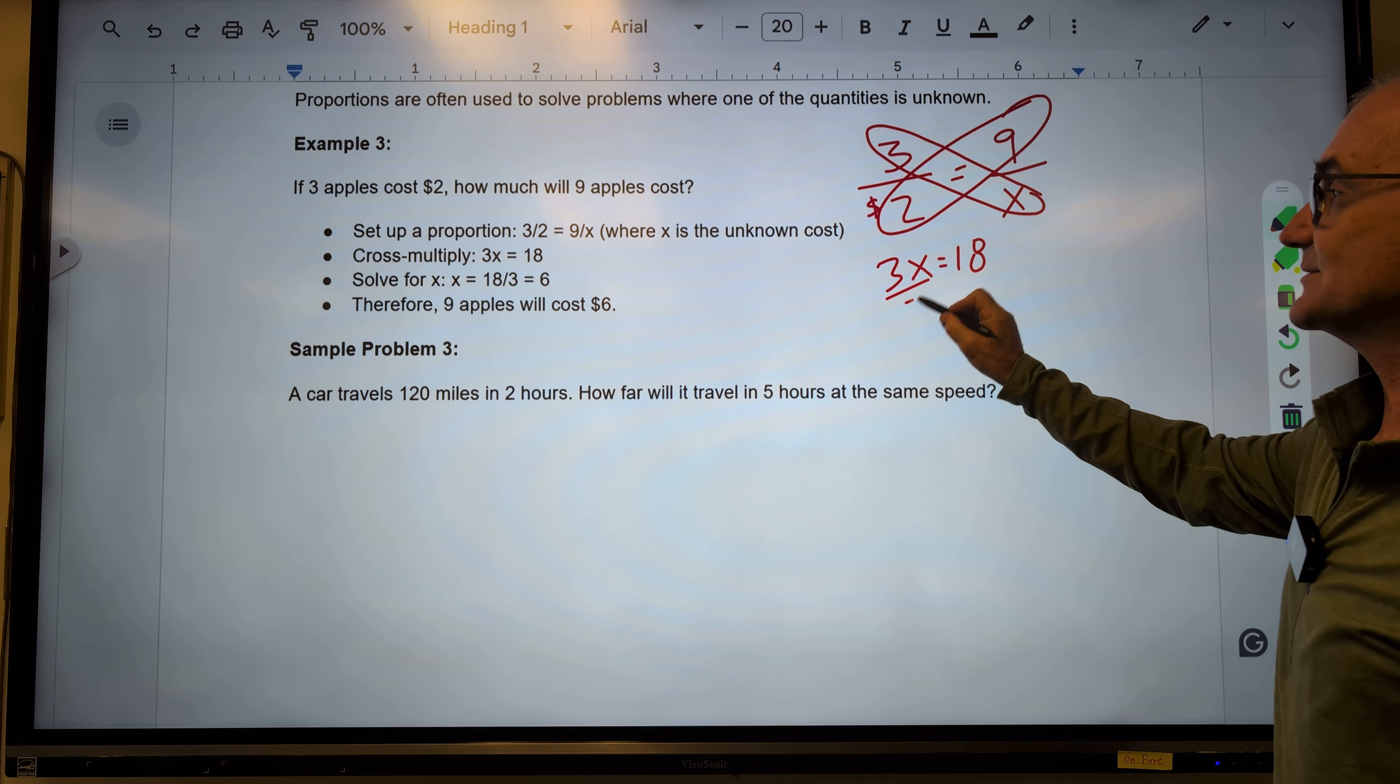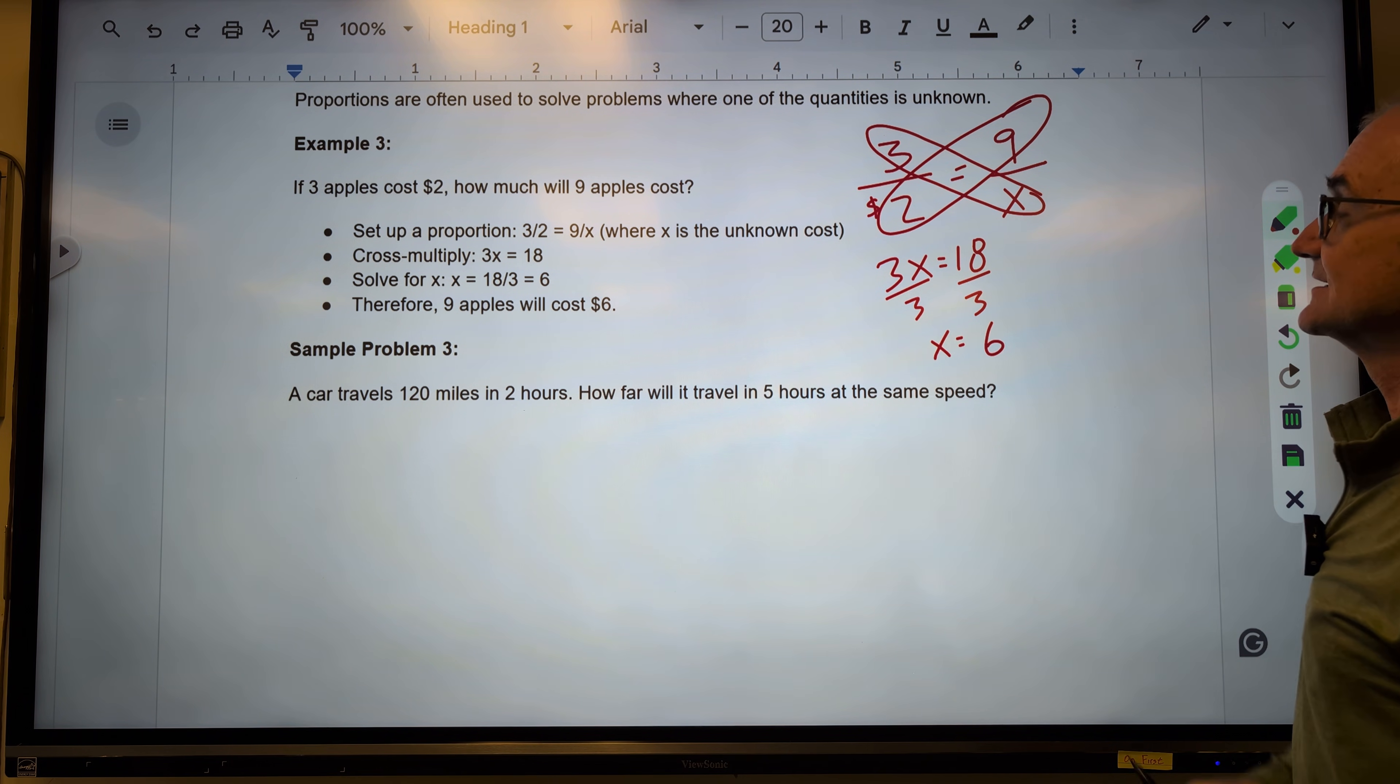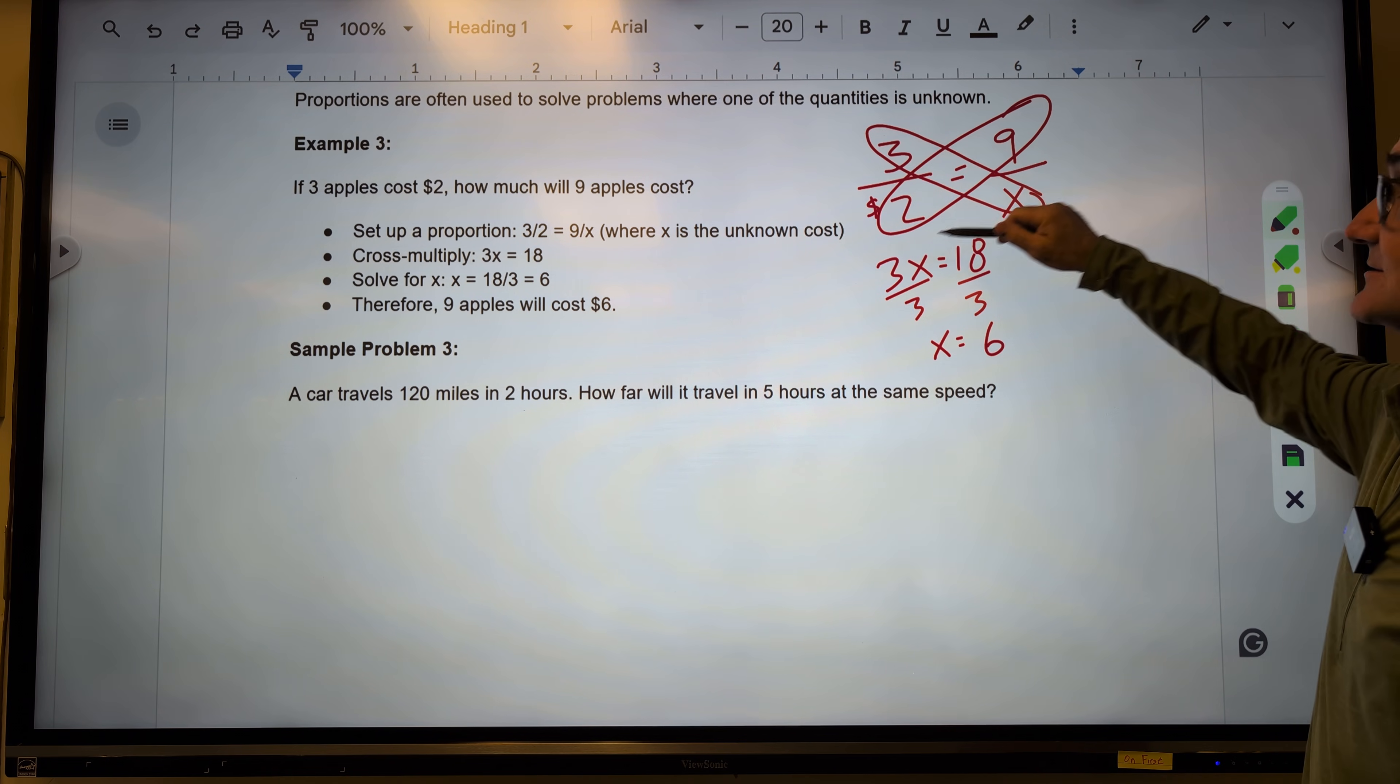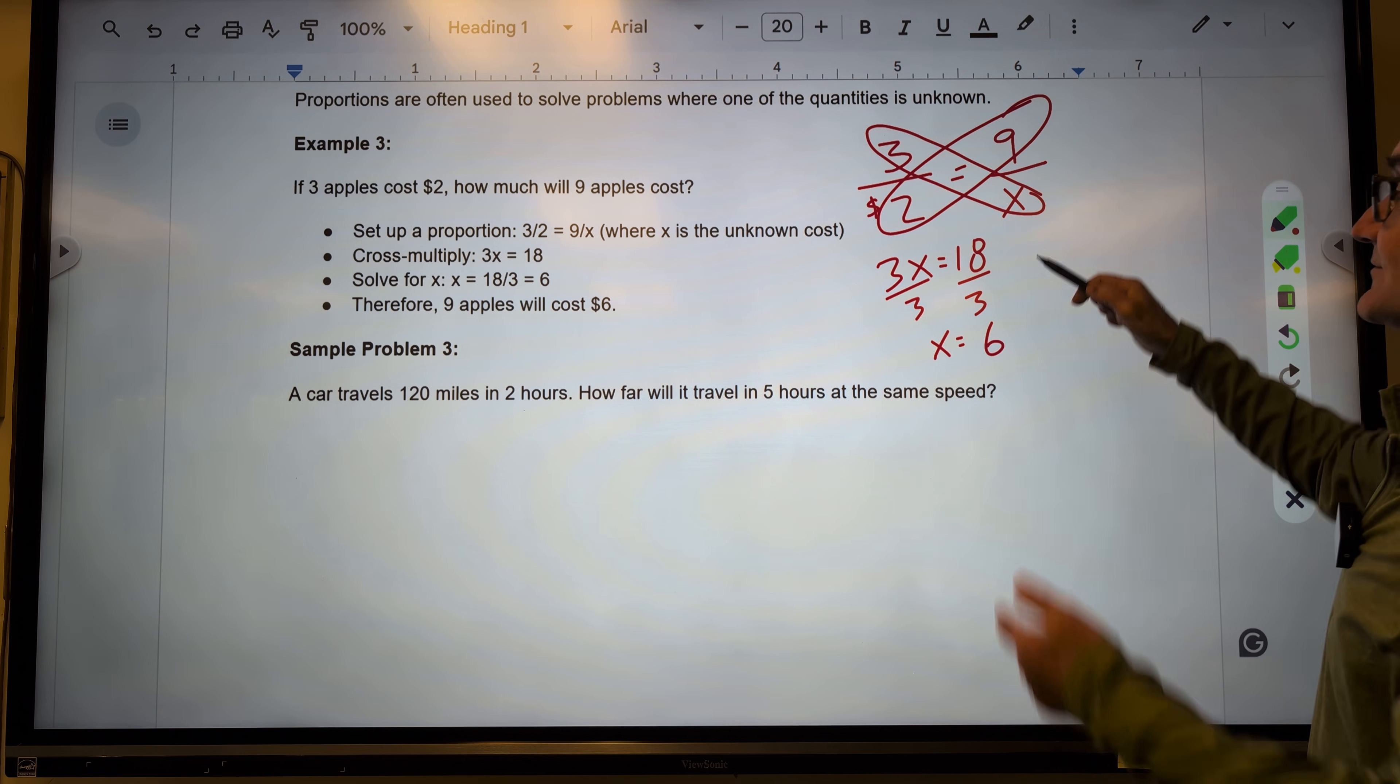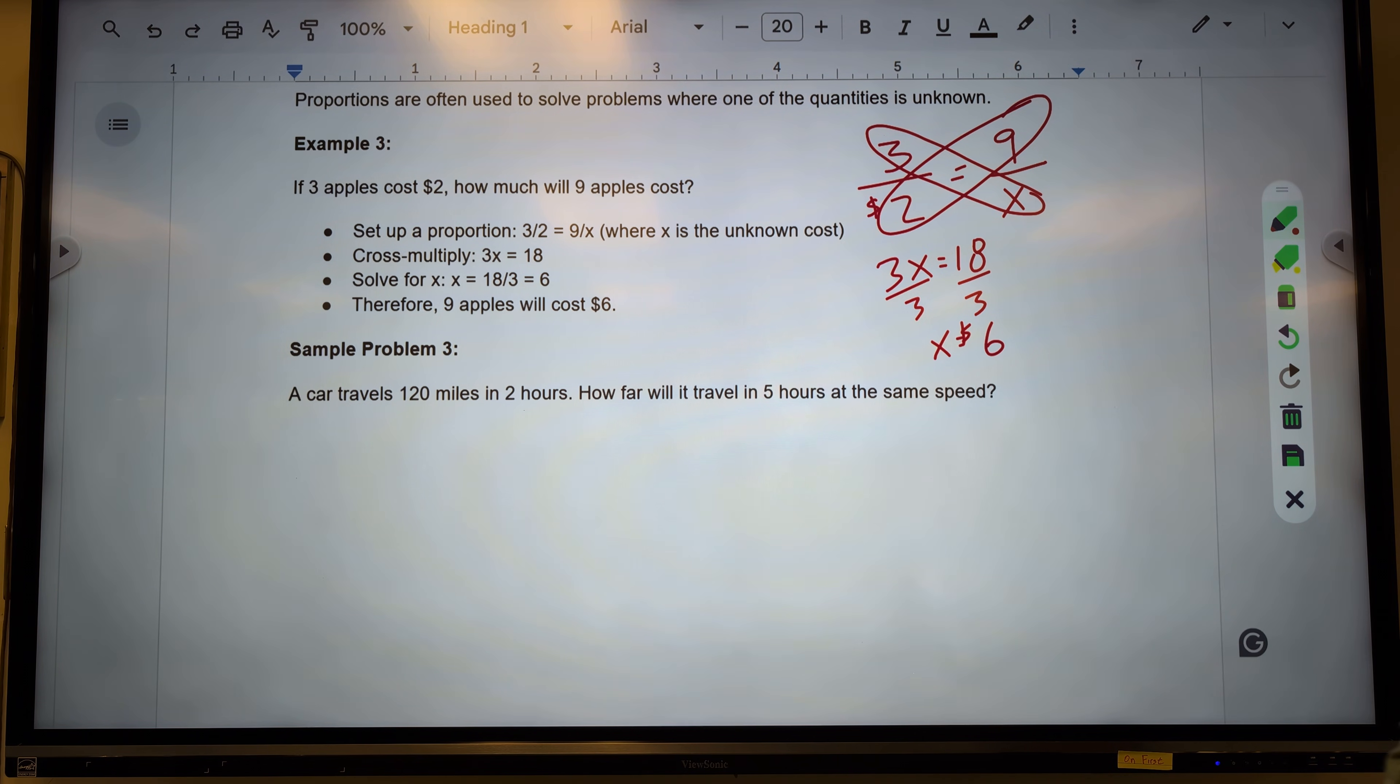Solving for x, I divide both sides by 3, and x is equal to 6. What is that 6? Well, if it's 3 apples for $2, it is 9 apples for $6. One ratio equal to another ratio is a proportion.